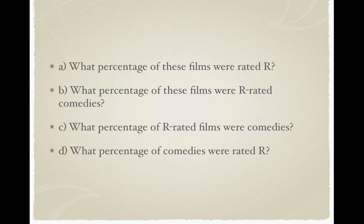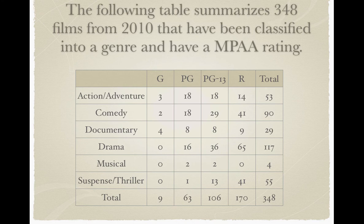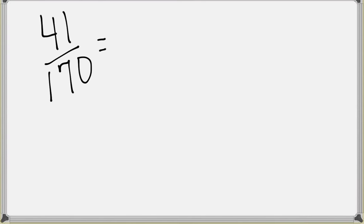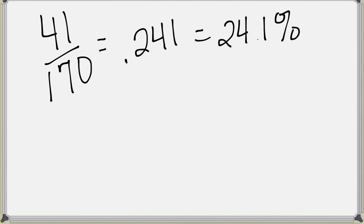The next question: what percentage of R-rated films were comedies? This one is a little different because it changes which group of movies we're looking at — we're no longer looking at the total group, just the R-rated films. Looking at the R column, we have 170 total R-rated films. Of those, 41 were comedies. So 41 out of 170 gives us 0.241, or approximately 24.1% of the R-rated films were comedies.